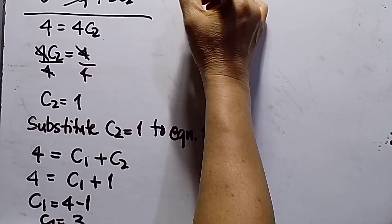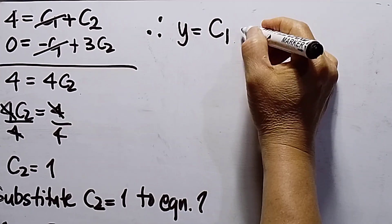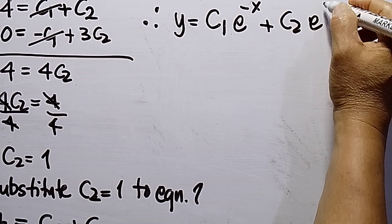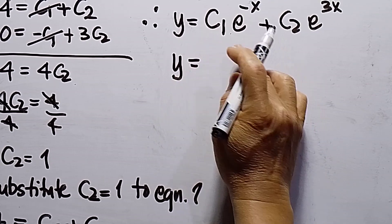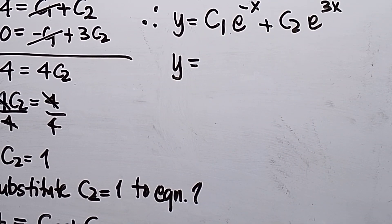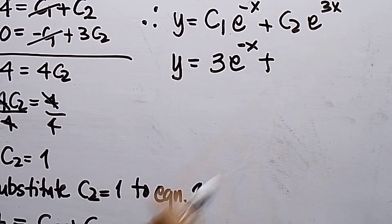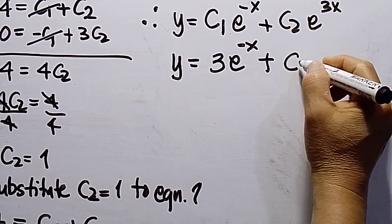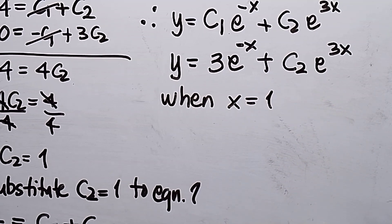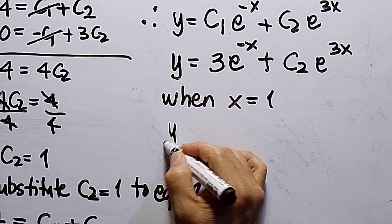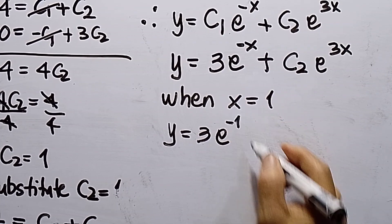Now I can write the particular solution by substituting c1 equals 3 and c2 equals 1: y equals 3e^(negative x) plus e^(3x).